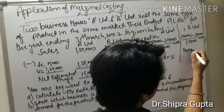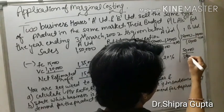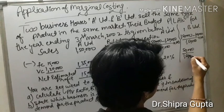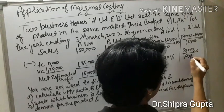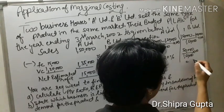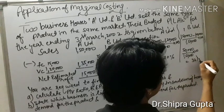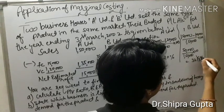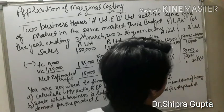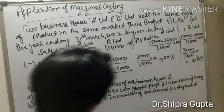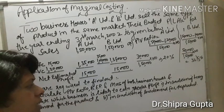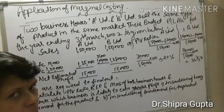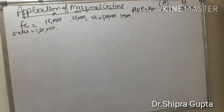For B Limited: S = 1,50,000 minus V = 1,00,000, divided by S = 1,50,000, multiplied by 100. That gives 50,000 divided by 1,50,000 multiplied by 100, and the answer is 33.33 percent. Now we will solve the breakeven point. The breakeven point formula is fixed cost divided by PV ratio.